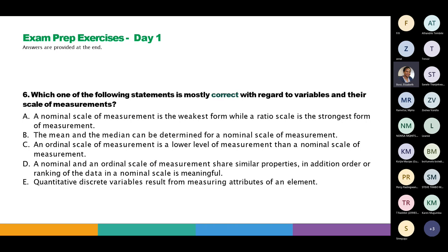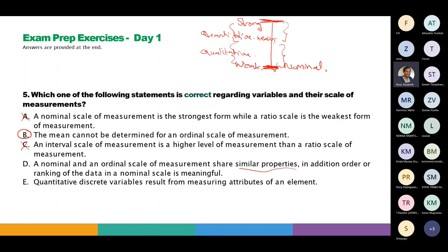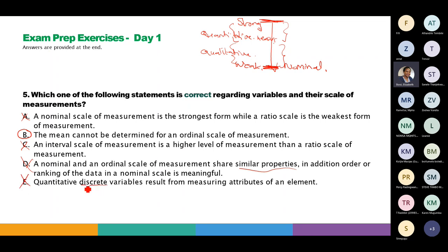Those are the things that you need to always be aware of. Statement E says quantitative discrete variables result from measuring attributes — that is incorrect because it should be continuous, not discrete. Discrete is counting; continuous is measuring.